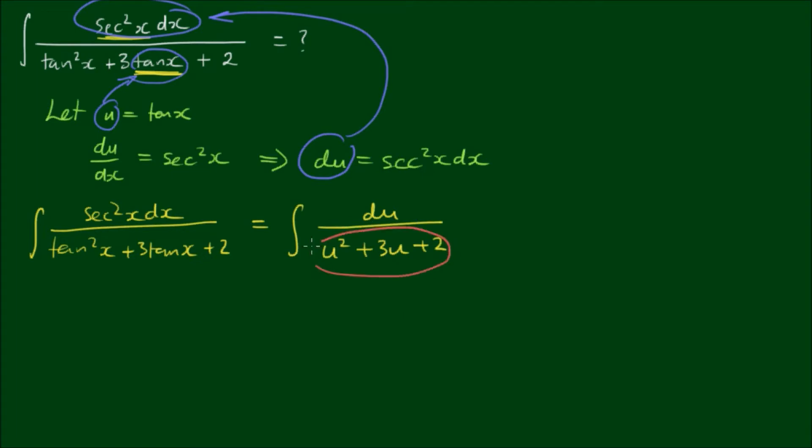Now with the denominator, u squared plus 3u plus 2, let me change color because it's a little bit dark. We can rewrite this as u squared plus u plus 2u plus 2. So I'm just separating the 3u into u plus 2u. And then we can factor out a u in the first two terms. So we can get u outside of u plus 1.